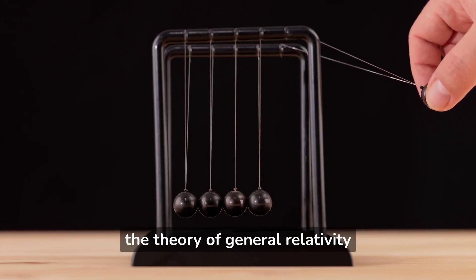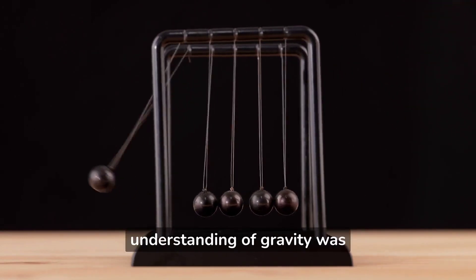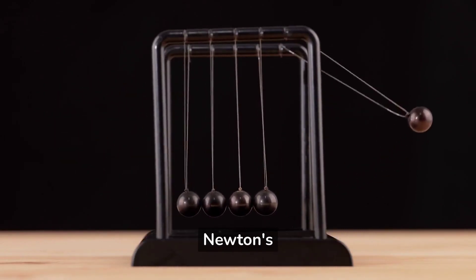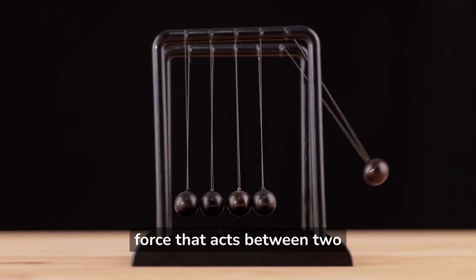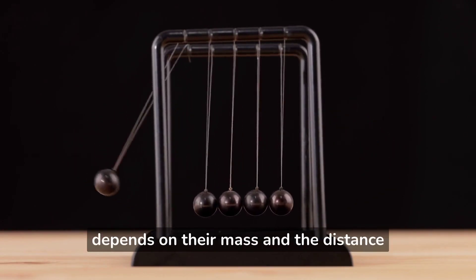Before Einstein developed the theory of general relativity in 1915, our understanding of gravity was based on the laws of Newton. Newton's laws describe gravity as a force that acts between two objects, the strength of which depends on their mass and the distance between them.